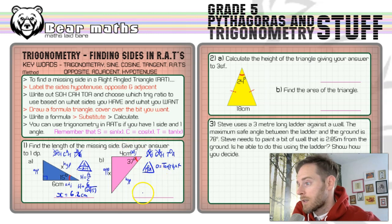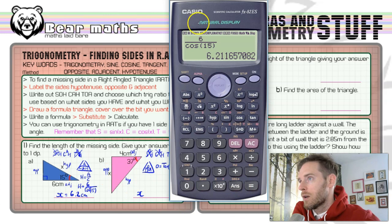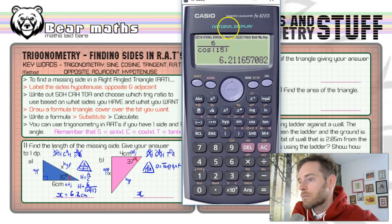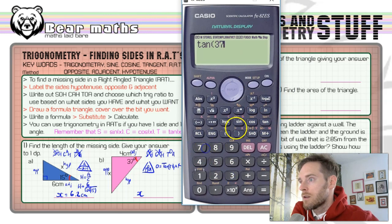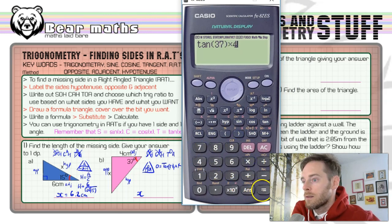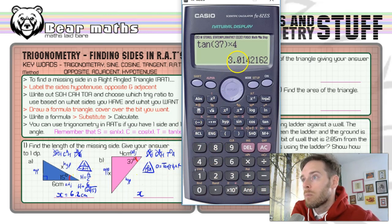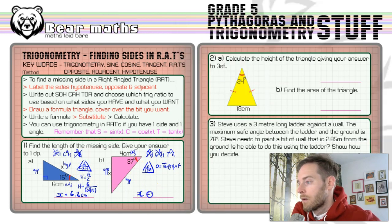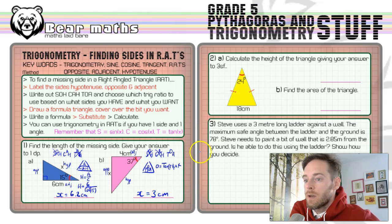That calculation gives the value of x. Type it in: tan(37) multiplied by 4. Sometimes you're multiplying and sometimes you're dividing. The answer is 3.01, so 3.0 to one decimal place. Done.